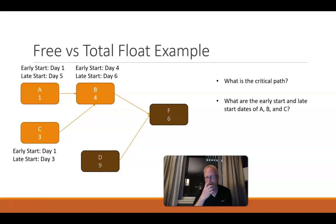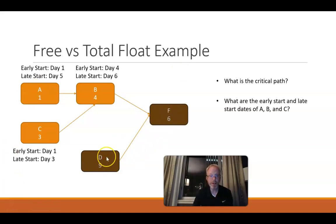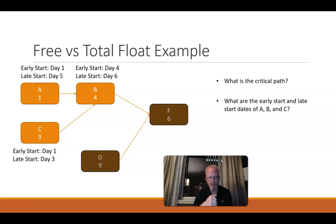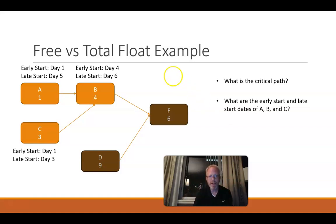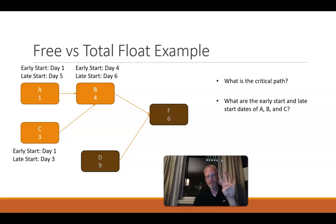Now for the late start dates, we reverse engineer from the critical path. The critical path is 15 days — 9 plus 6. Task F is six days, so it could start on day 10 and run through day 15. That means B must finish at the end of day nine at the absolute latest. B takes four full days, so counting back: days six, seven, eight, nine — the late start date of B is day six.